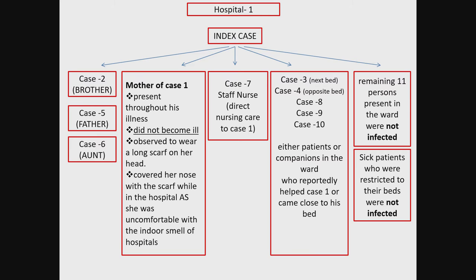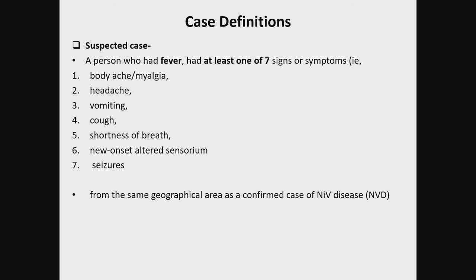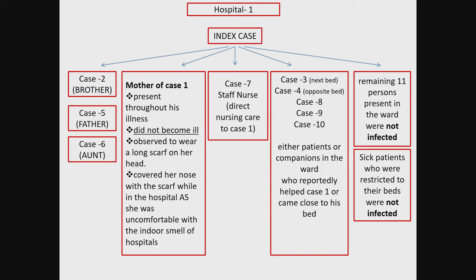Those who were not infected were restricted to their beds, too sick to move. Among those who were infected, these were companions of patients who came to help the index case because he was breathless, coughing, and vomiting. When he was vomiting, people came to support him, and that is how they acquired the infection.